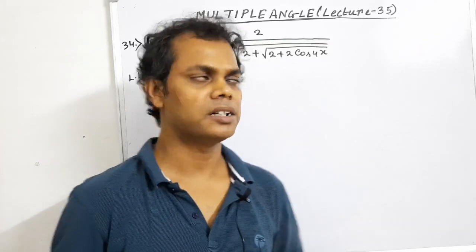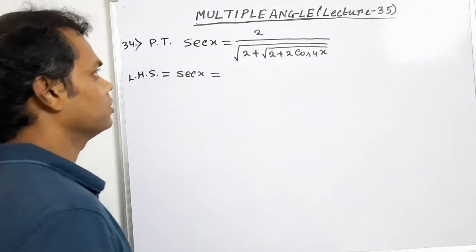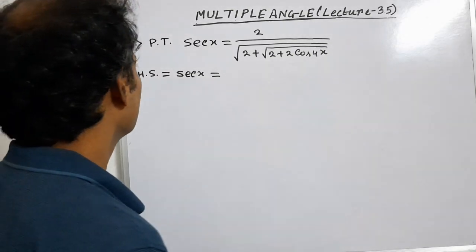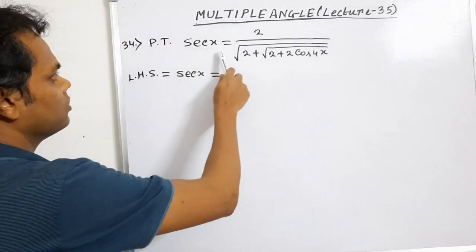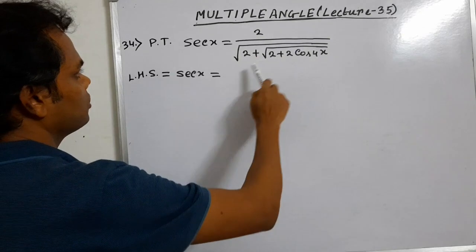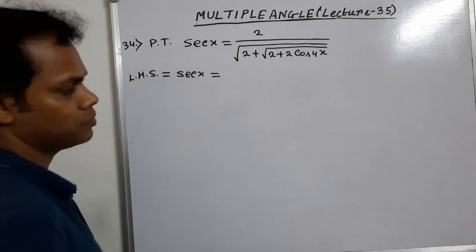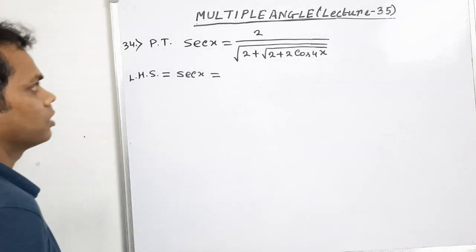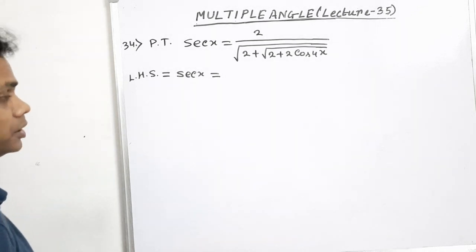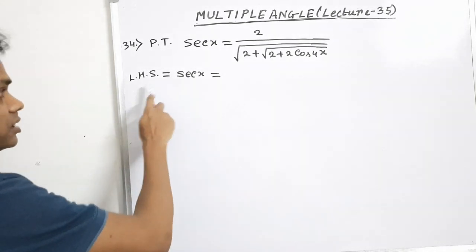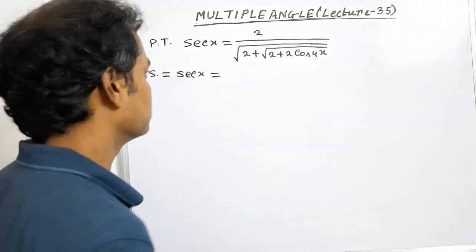Hello students. The topic of this video is Multiple Angles — this is our 35th lecture on this topic. In this topic, we prove that sec x equals 2 divided by the square root of 2 plus the square root of 2 plus cos 4x. We prove this sum by two ways: one from LHS to RHS, and the second from RHS to LHS.